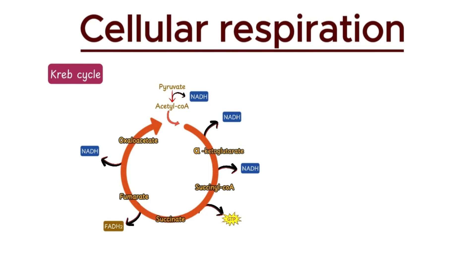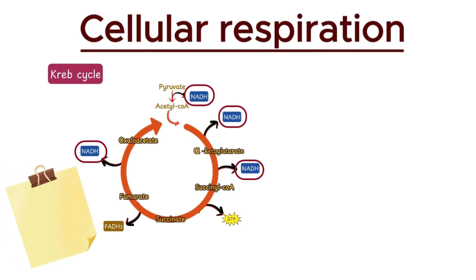Let's summarize the energy production from the Krebs cycle and the linking reaction. The Krebs cycle produces three molecules of NADH, one molecule of GTP (which is equivalent to ATP), and one molecule of FADH2 per cycle. Additionally, the linking reaction produces one NADH. So, together,